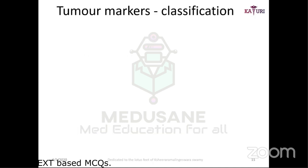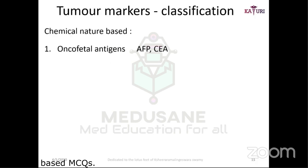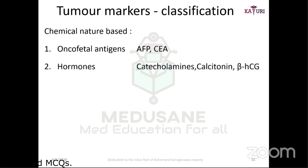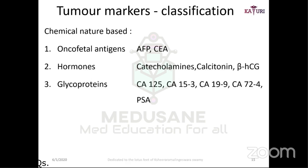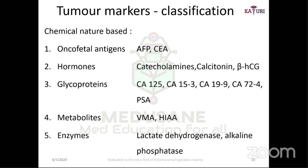By chemical nature, tumor markers include oncofetal antigens such as alpha-fetoprotein and carcinoembryonic antigen (CEA); hormones such as catecholamines, calcitonin, and beta-hCG; glycoproteins such as CA-125, CA-19-9, CA-72-4, and PSA. CA-125 is most important in ovarian cancer as a prognostic marker. Vanillylmandelic acid (VMA) is relevant in pheochromocytoma and carcinoid tumors. Enzymes such as lactate dehydrogenase and alkaline phosphatase are also tumor markers.